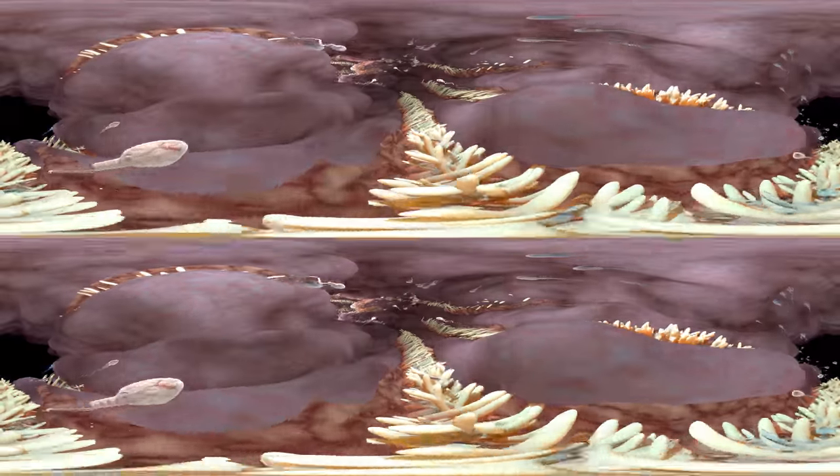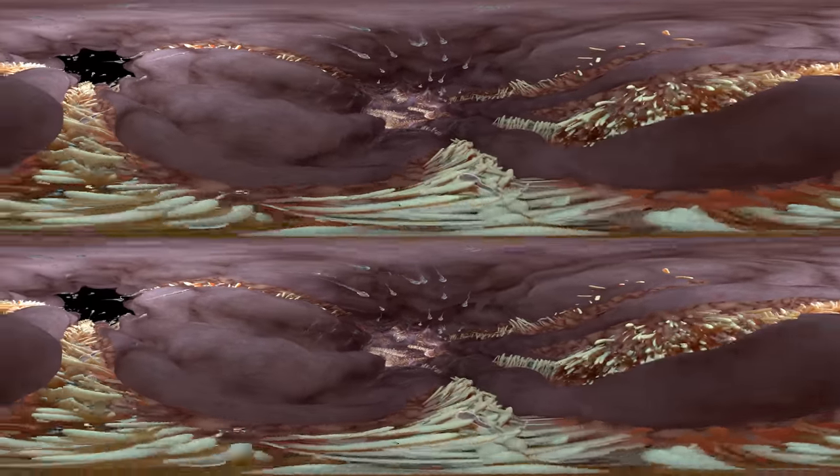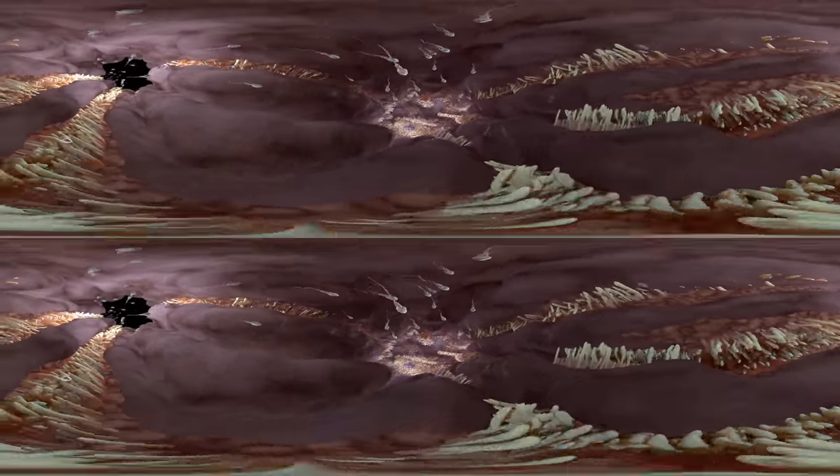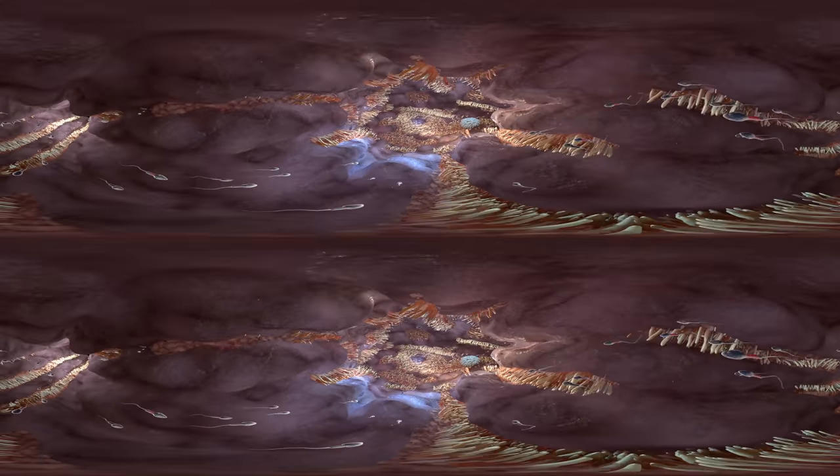While in the fallopian tube trying to reach the egg cell, some sperms get trapped by the cilia and die. Only a few of the original 300 million sperms have survived and managed to reach the egg cell, while it is being pushed towards the uterus.